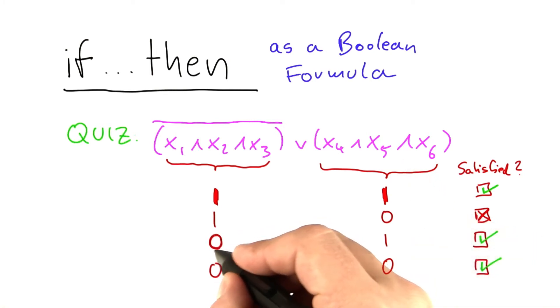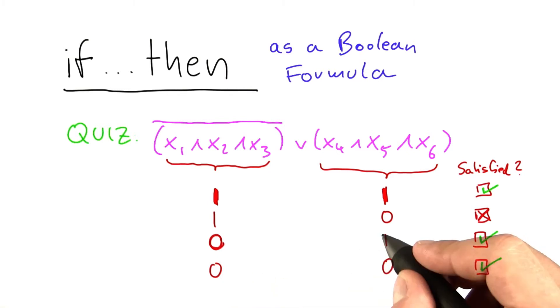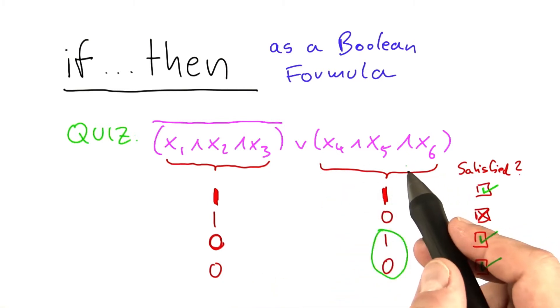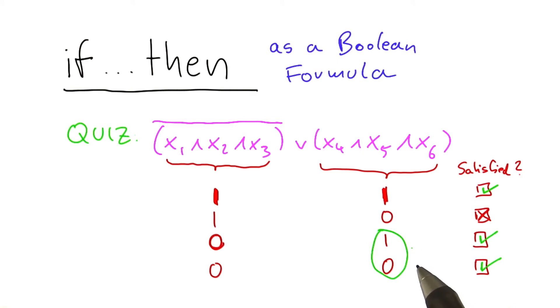And in the other case, where x1 and x2 and x3 evaluates to 0, well, then as you can see, we basically don't care what the other variables are doing because the Boolean formula is already satisfied.